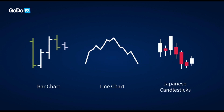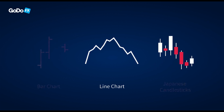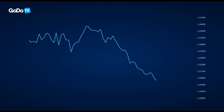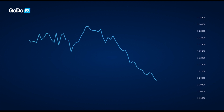A lot of traders prefer the line chart to Japanese candlesticks or bars. For example, many traders who trade the stock market prefer to use the line chart to see price movements. This is because they consider the closing price to be the most important price of all. The line chart basically consists of the closing price for each period.